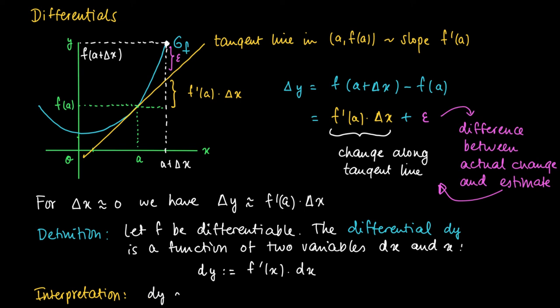Then we see that dy is almost the same as the actual change in the function value. So dy is approximately Δy, which is the precise change in function value from x going from a to a plus Δx, for small values of Δx.